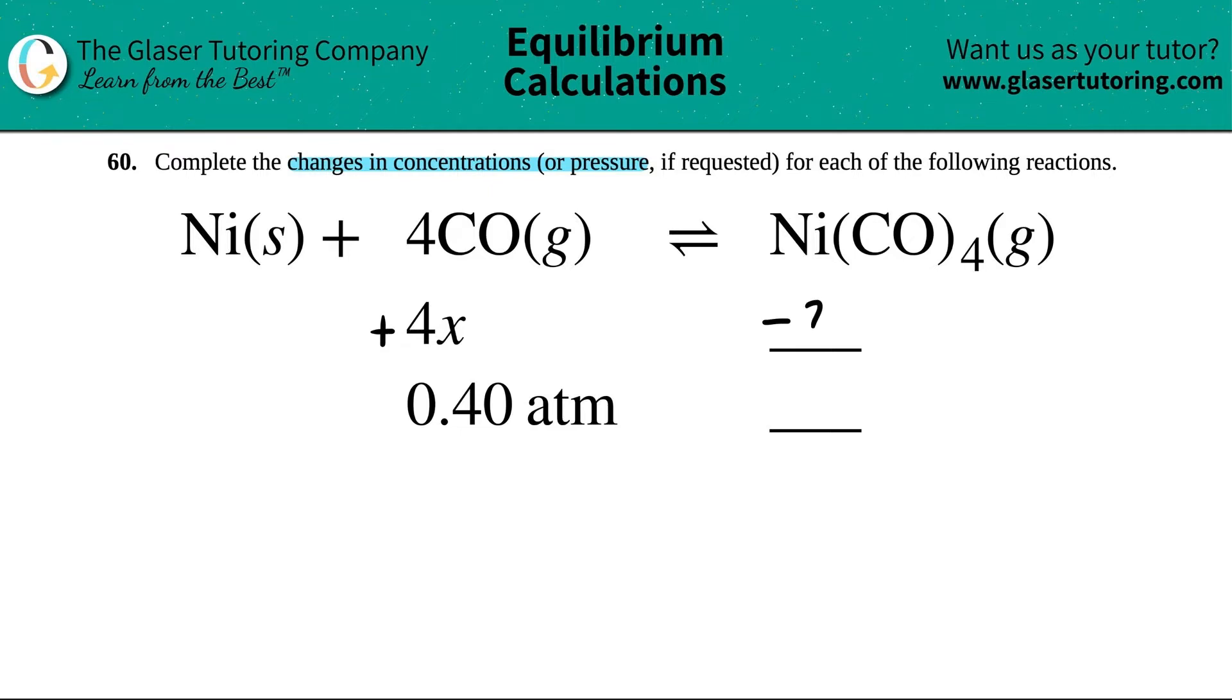Now we just got to figure out what goes here. That comes from the coefficients. You see how there was a 4 in front of the CO, and there's no number in front of the Ni(CO)4. That just means that there's 1. Now over here, we increased by 4x, because the 4 is the 4 in the x value.